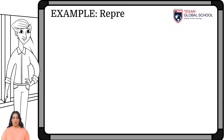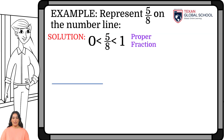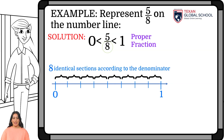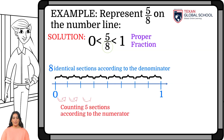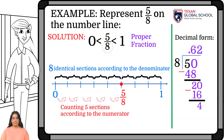In this last example, represent 5 eighths on the number line. We can see that it is a proper fraction since the numerator is less than the denominator. Therefore, the quotient will be greater than 0 and less than 1. So, to represent this fraction on the number line, we know that it will be between 0 and 1. Since the fraction has 8 as a denominator, separate the segment into 8 equal parts. And, since the numerator is 5, locate the fraction by hopping 5 times to the point where the fraction is found. Finally, let's perform the division of 5 by 8, resulting 0.625.